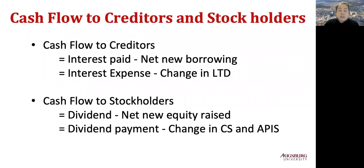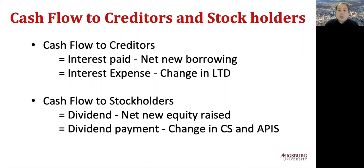Cash flow from assets, which we looked at in Part 2, should be distributed to the parties who provide funds. Who provides funds? They are creditors, if they provide debt financing by lending money to the company, or stockholders, if they provide equity financing by owning stocks.